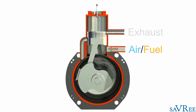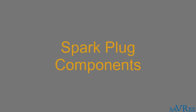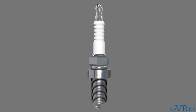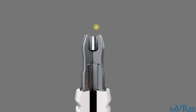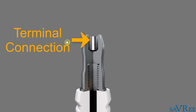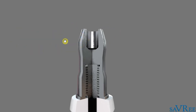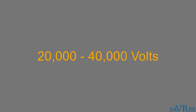Now let's look at the components and figure out how we're getting this spark. Here we've got our spark plug, and in order to figure out how it works, we're going to take a cross section and work our way down from the top. We can see we've got a terminal connection on the top — a place where we can connect the high voltage that is created by the ignition coil. The ignition system supplies a very high voltage to the terminal, and this high voltage is going to be in the range of between 20,000 to 40,000 volts.